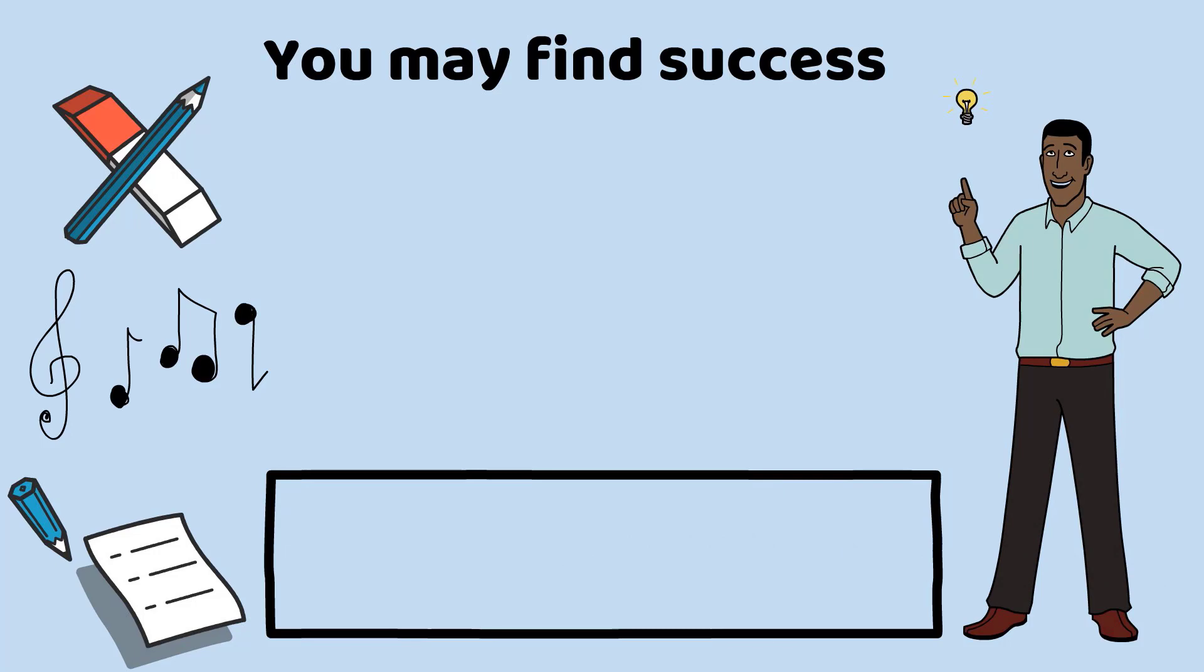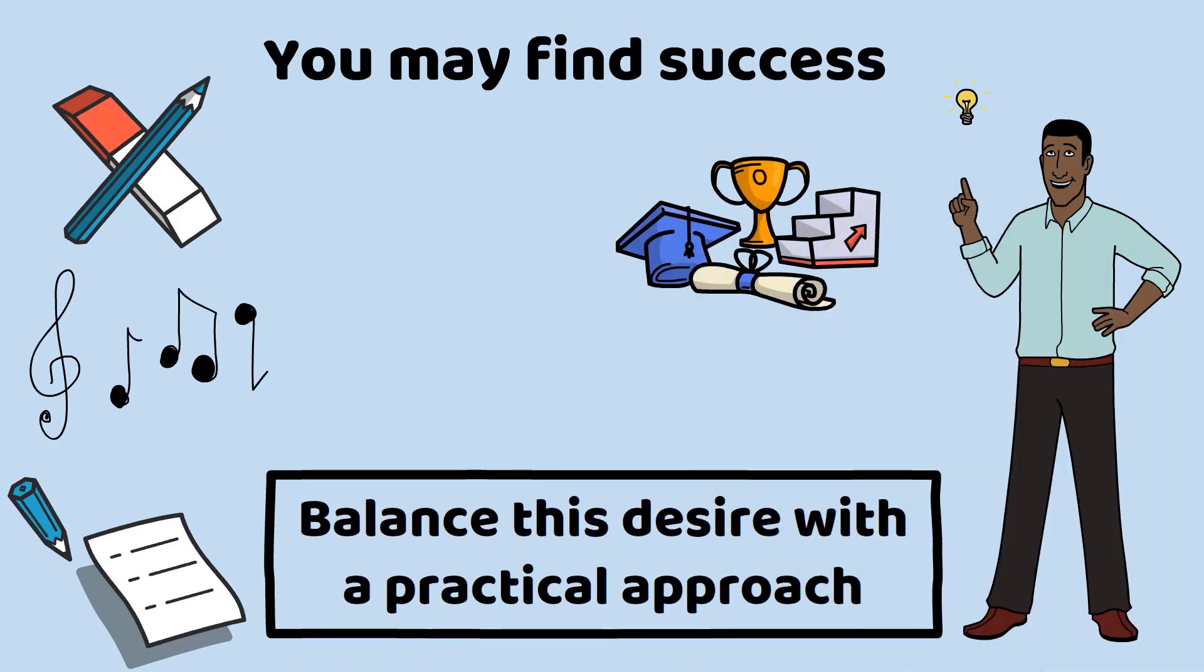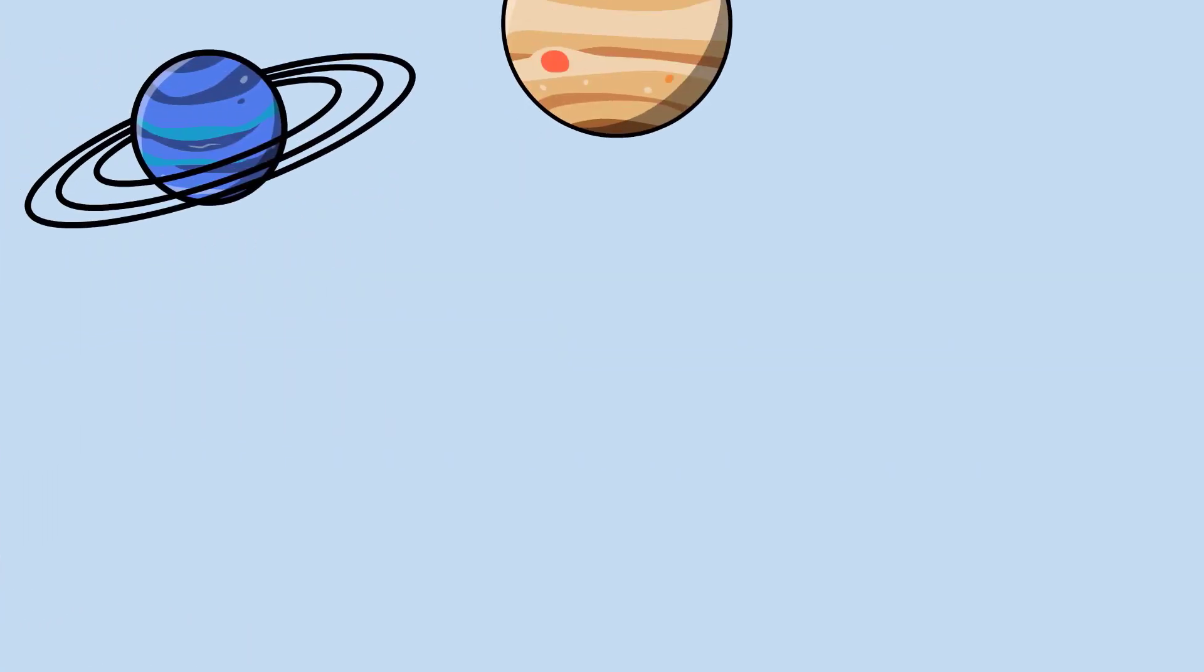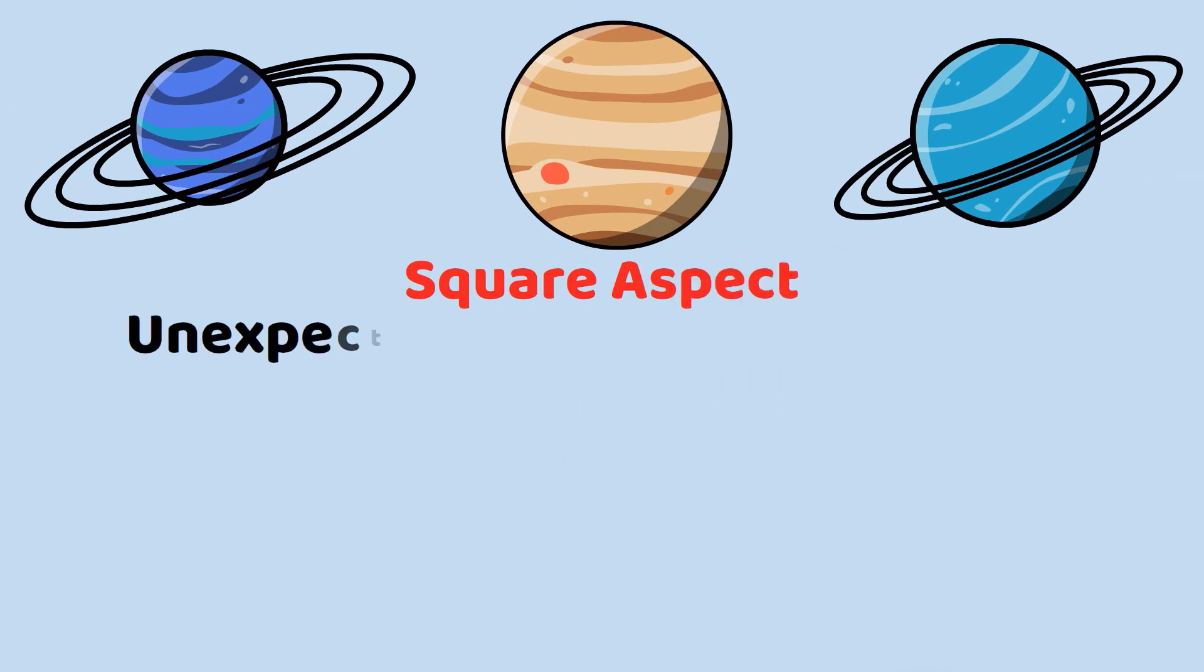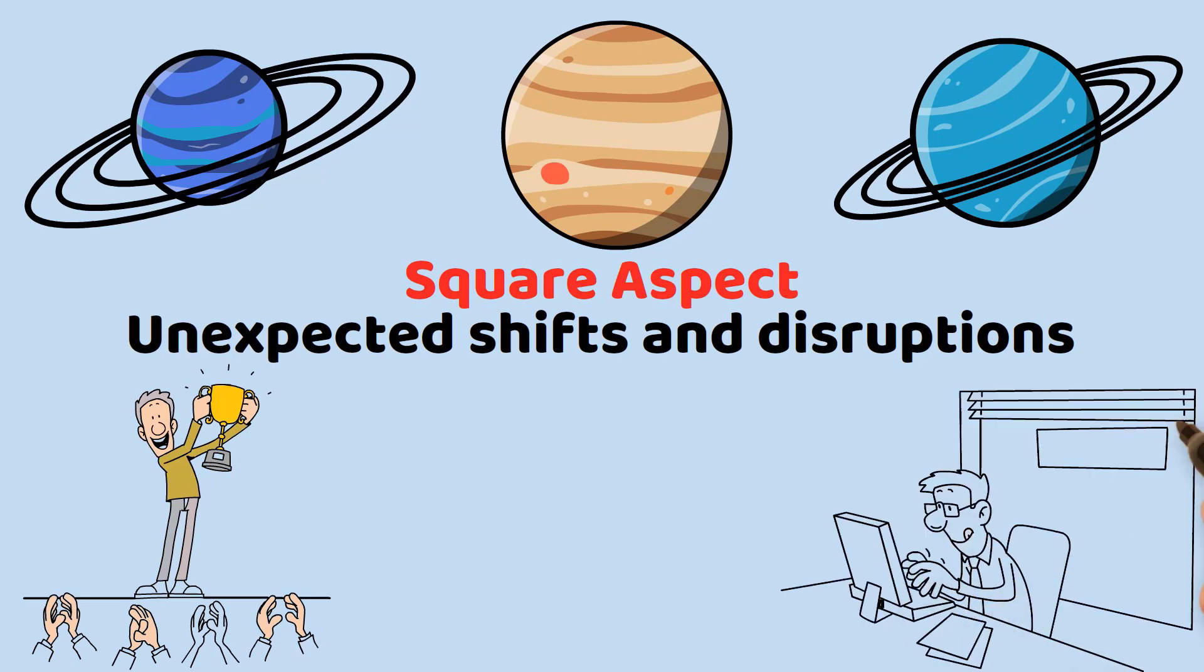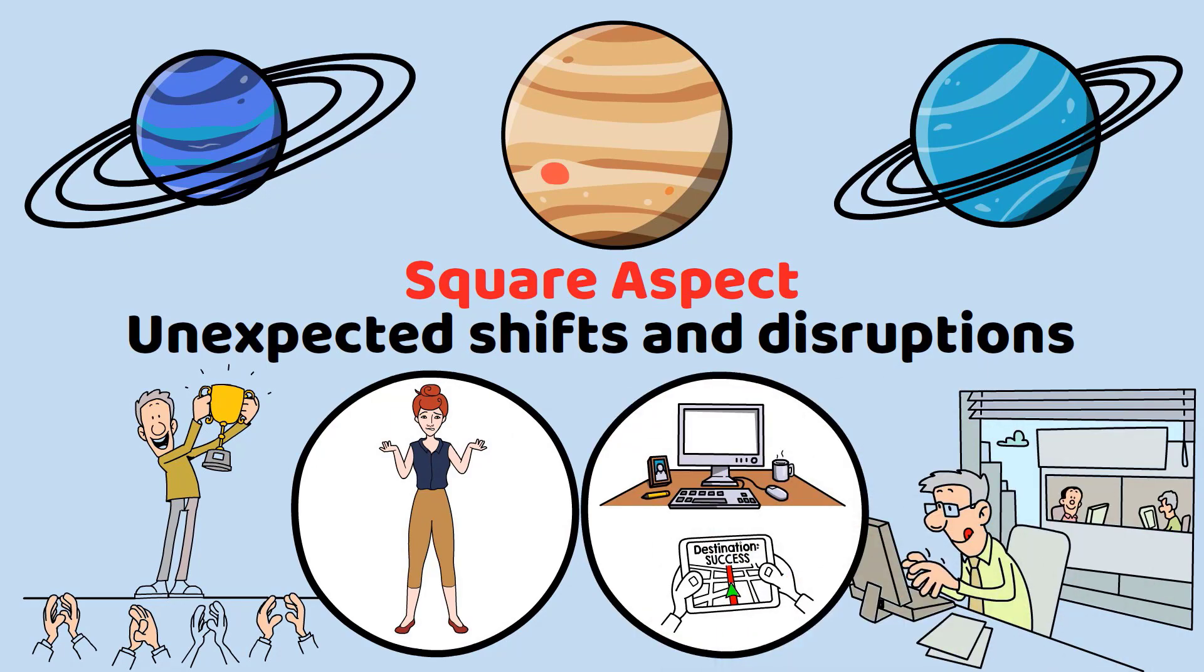However, it's important to balance this desire with a practical approach to your career goals in order to achieve long-term success. In addition to Neptune's influence, Jupiter and Uranus will form a square aspect that can bring unexpected shifts and disruptions in your career path. You may experience sudden opportunities for growth and transformation, but you may also face some confusion or uncertainty as you navigate changes in the workplace.